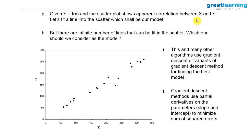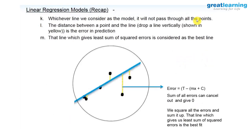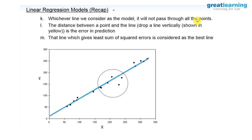Imagine you have this kind of data points scattered in the mathematical space between X and Y. What our algorithm is going to do is try out these different models. Of these different models, it is going to find one which is the best of all the lines. The best of all the lines is my best fit model.